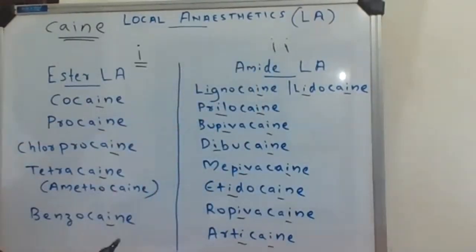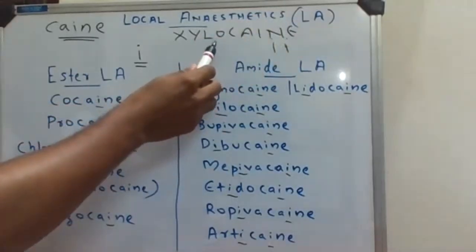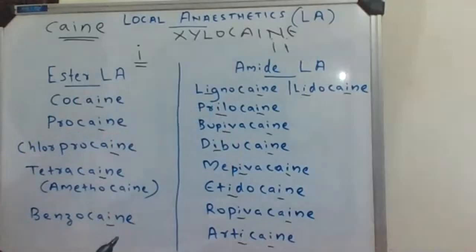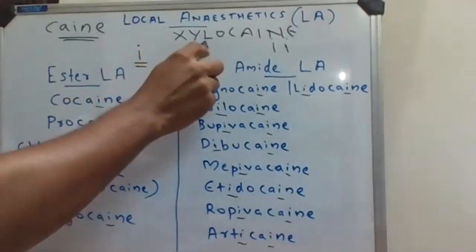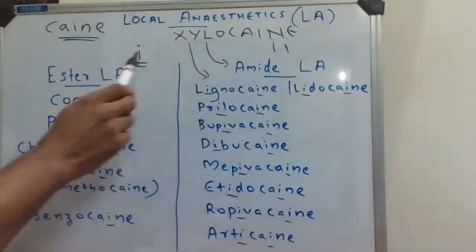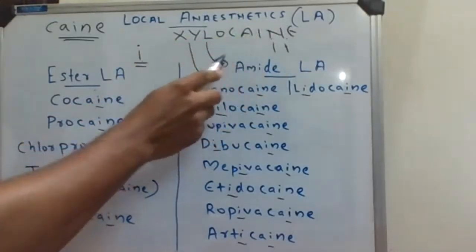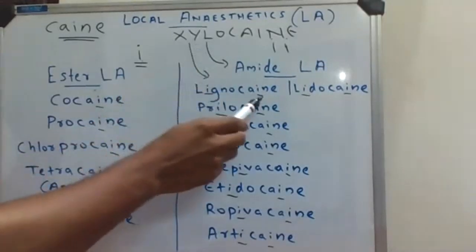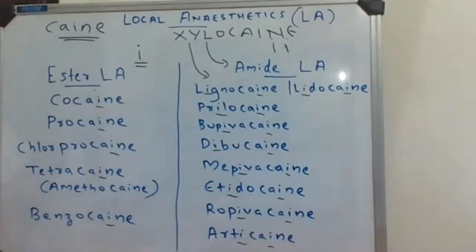Now, there may be a question whether silocaine is an ester or amide local anesthetic. As per the mnemonic, you would say it is an ester local anesthetic since it has only one I. However, silocaine is actually an amide local anesthetic because silocaine is the brand name of lignocaine. So remember: one I = ester, two I's = amide, except silocaine, which has only one I but is an amide local anesthetic as it is the brand name of lignocaine. This is the complete classification of local anesthetics based on their connecting bond. Hope you understood this class — if you like this video, give a thumbs up and subscribe for more videos. Thank you.